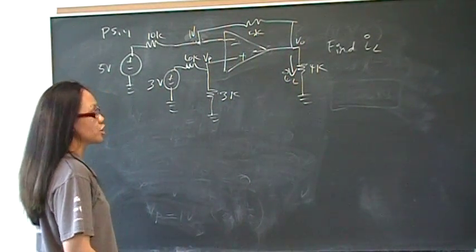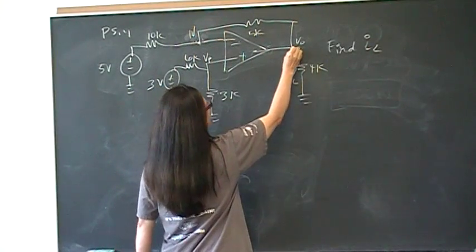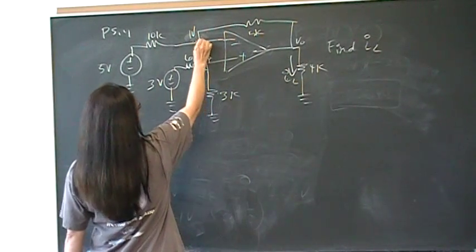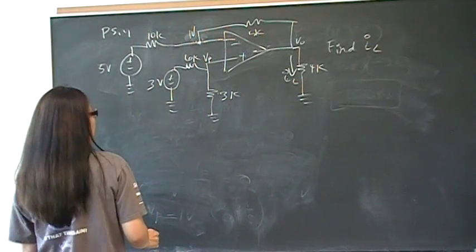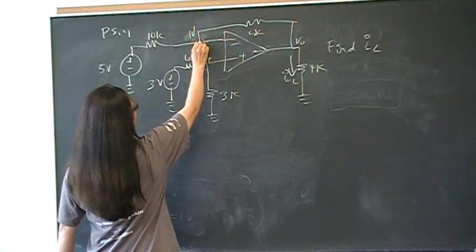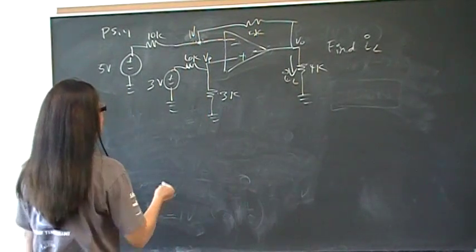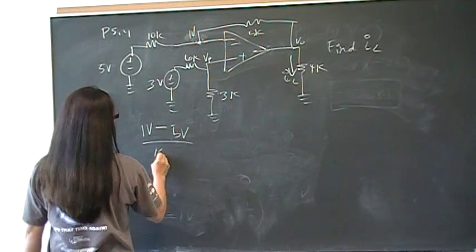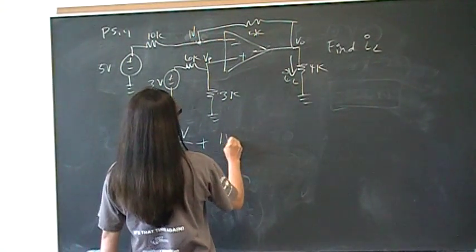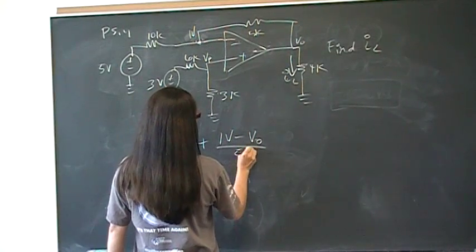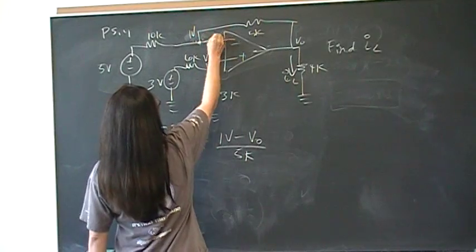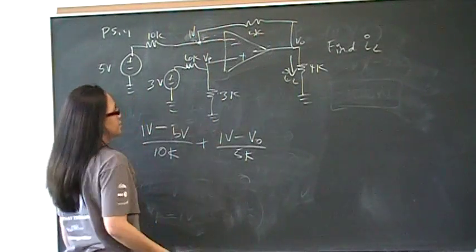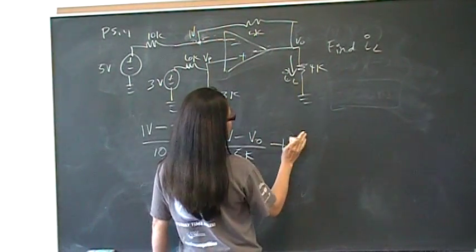So doing a node voltage equation there would require a second equation. What we're going to do instead is do the node voltage at Vn and solve for Vout that way, since we already know Vn is 1 volt. So: (1 volt minus 5 volts) over 10k, plus (1 volt minus Vout) over 5k — and the current into the op amp input is assumed to be 0 — so we add plus In, which is 0, and that equals 0.